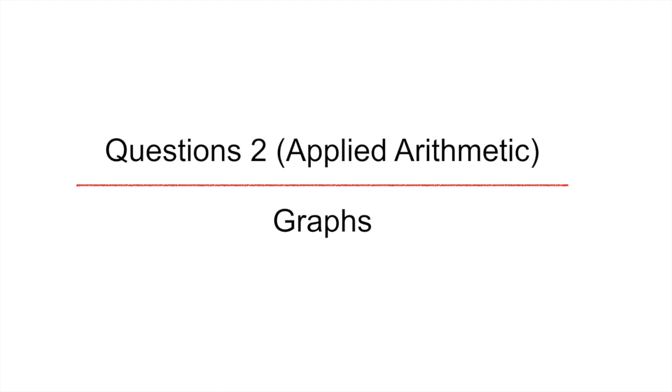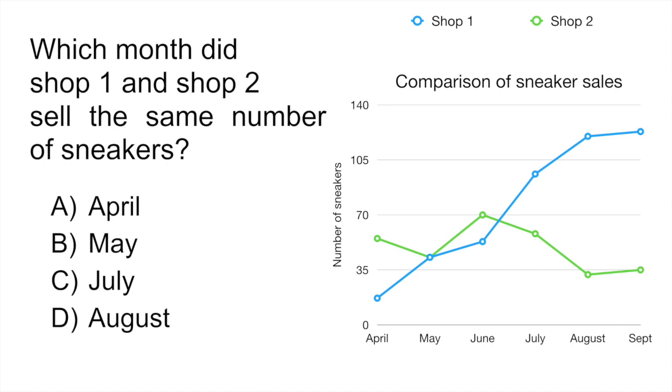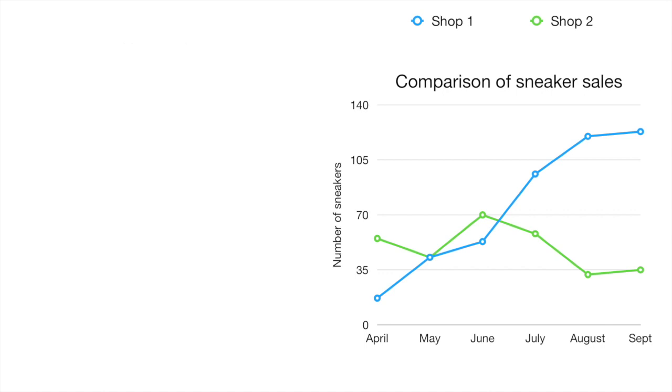Question two is an applied arithmetic problem looking at a line graph. It says which month did shop one and shop two sell the same number of sneakers? So before we get started with that question, let's just quickly remind ourselves of how to read a graph. First thing, look at that. That is the title. It's telling you what you're seeing in the graph. In this case it's telling you the comparison of sneaker sales.